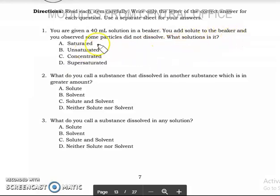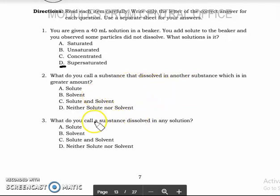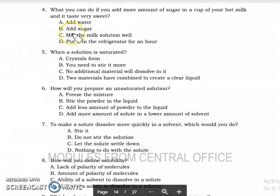So for number one, you add solute to the beaker and you observe some particles did not dissolve, so that's already supersaturated. What do you call substance that dissolve in another substance which is in greater amount? It should be number two, the clue here is in greater amount, so the answer should be solvent, greater amount. I'm so sorry for that.